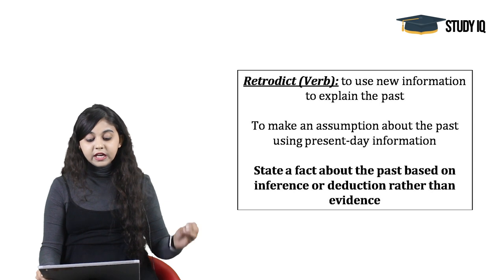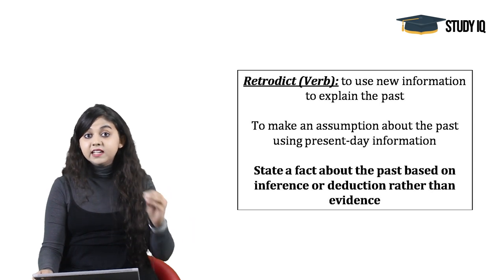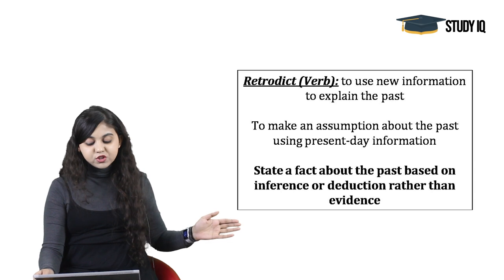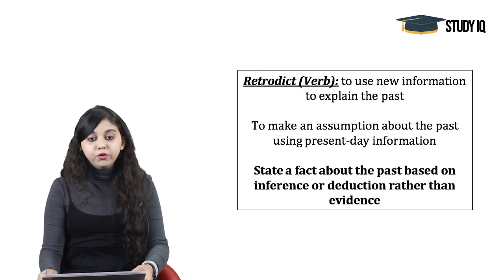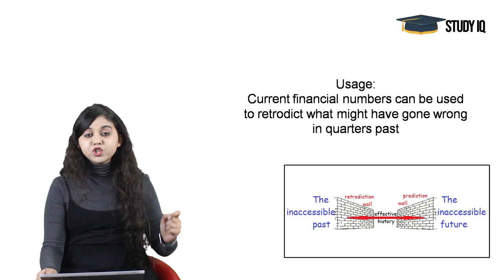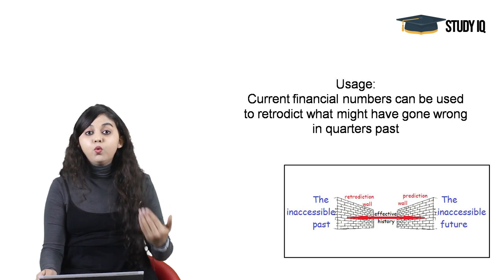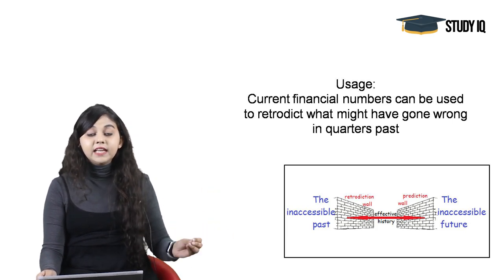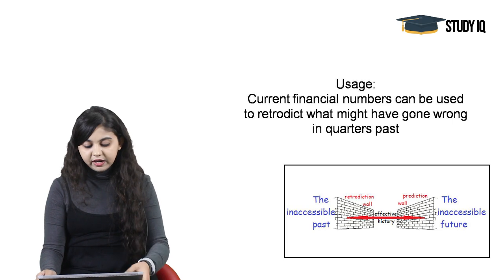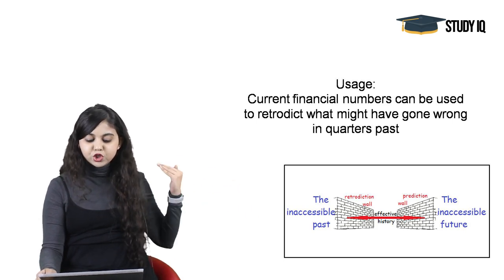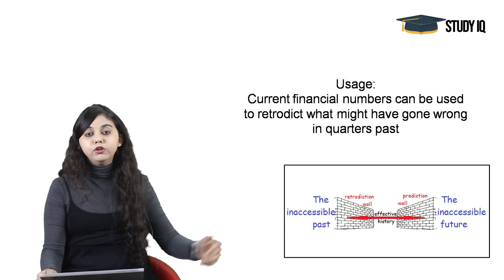Retrodict is a verb meaning to use new information to explain the past, or to state a fact about the past based on inference or deduction rather than evidence. Usage: Current financial numbers can be used to retrodict what might have gone wrong in quarters past — pichle quarters mein kya galat hua, that can be retrodicted by looking at current financial numbers. Retrodiction is looking at the past; prediction is looking at the future.